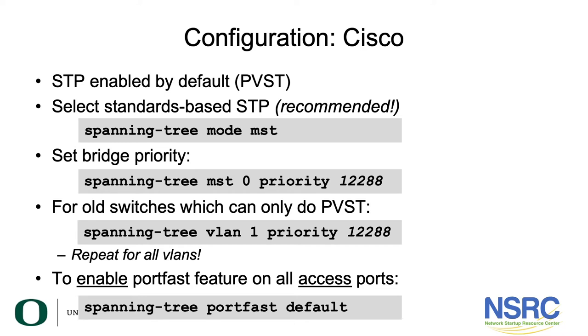Let us look at some sample configuration, starting with Cisco. Spanning tree is enabled by default. Depending on the switch, it might support multiple spanning tree, in which case you can select MST, which we highly recommend. You say 'spanning tree mode MST' and then you can set the bridge priority to 12288 or 12k.